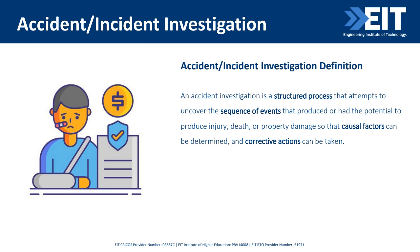What is accident incident investigation? Accident investigation is a structured process to uncover the events or sequence of events that cause, or have the potential to cause, injury, death, or property damage — so that causal factors can be determined and corrective actions can be taken to prevent that kind of incident from happening in the future.